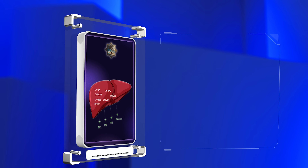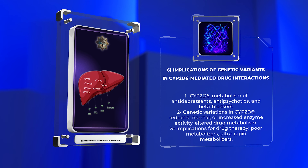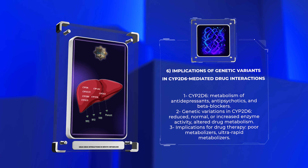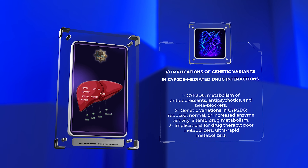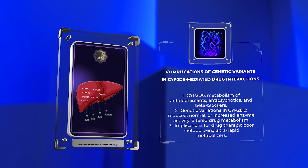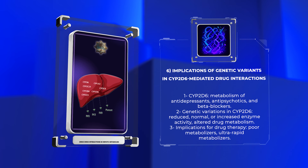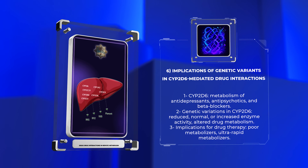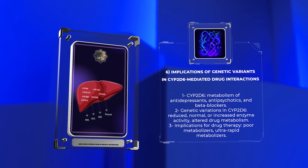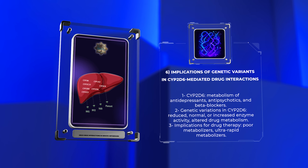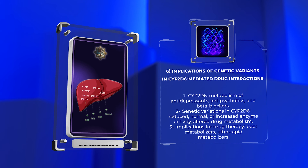CYP2D6 is involved in the metabolism of numerous medications, including antidepressants, antipsychotics, and beta-blockers. Genetic variations in the CYP2D6 gene can result in reduced, normal, or increased enzyme activity, leading to altered drug metabolism. Poor metabolizers may experience reduced drug efficacy, while ultra-rapid metabolizers can have exaggerated drug effects. This genetic polymorphism can significantly impact drug therapy and must be taken into consideration when prescribing medications metabolized by CYP2D6.